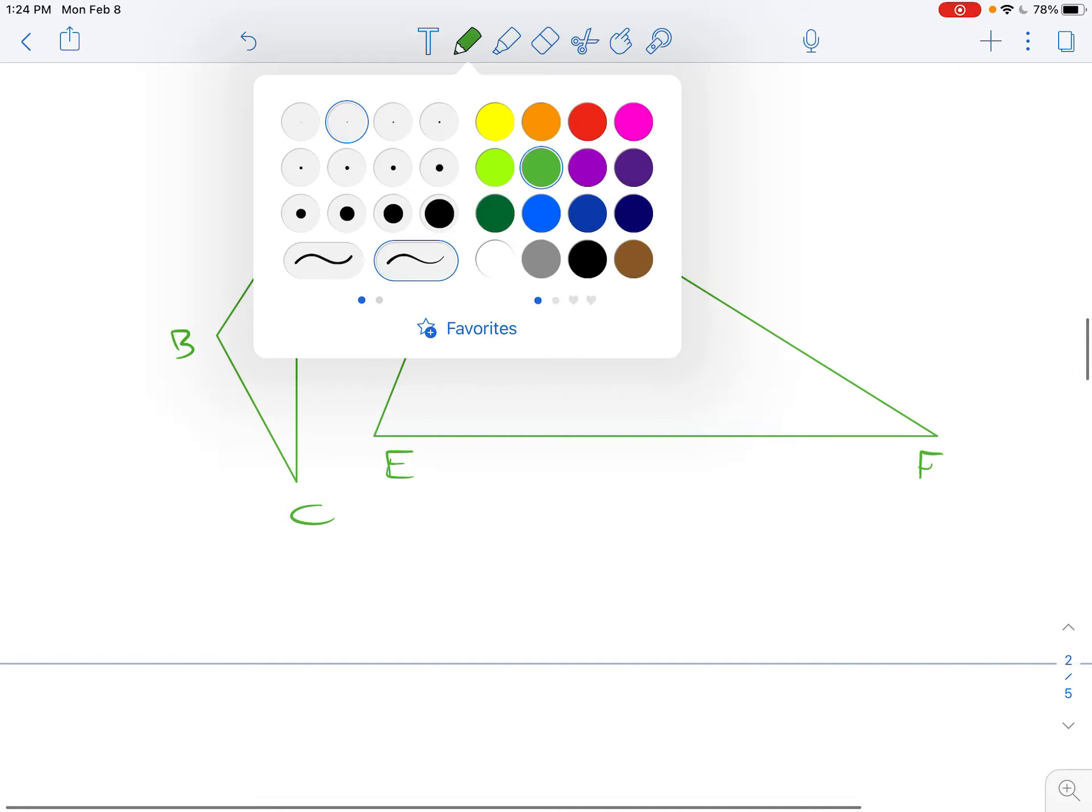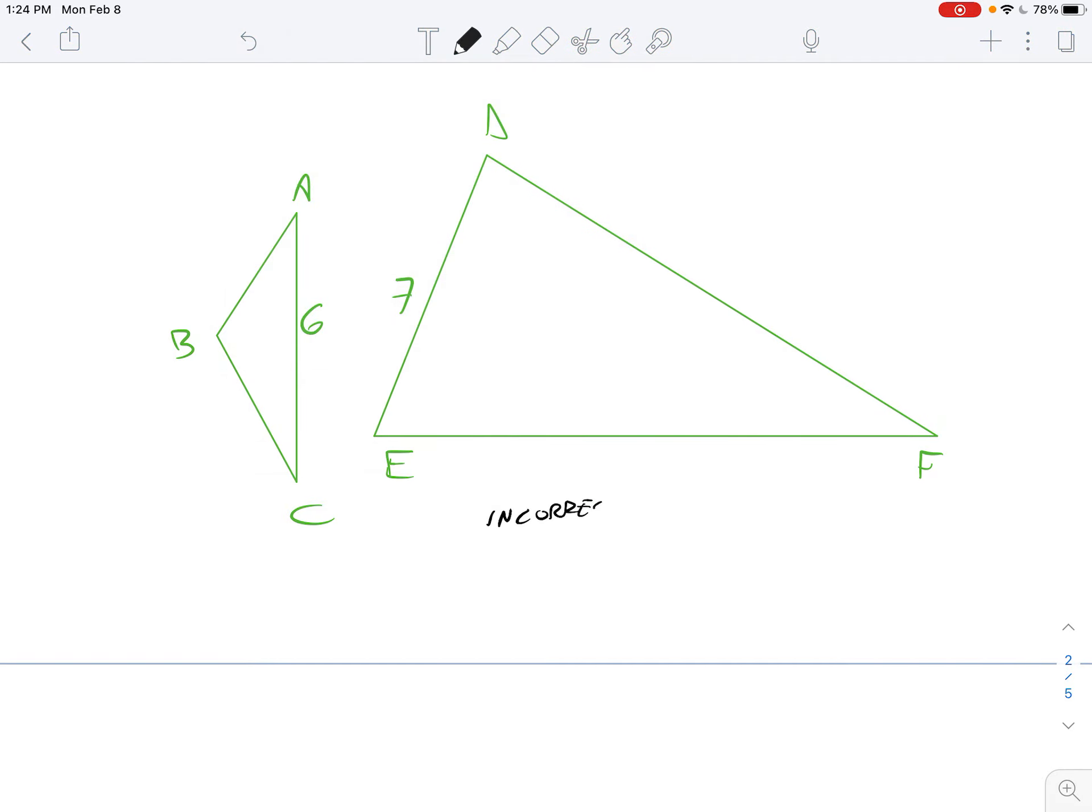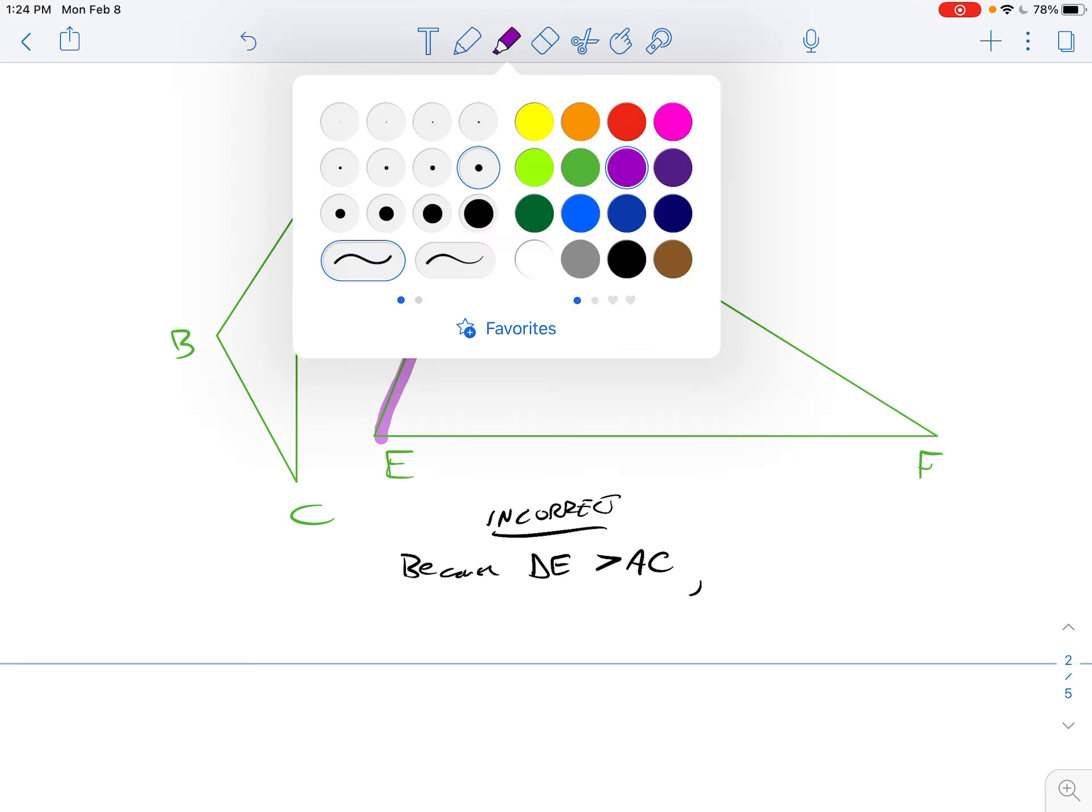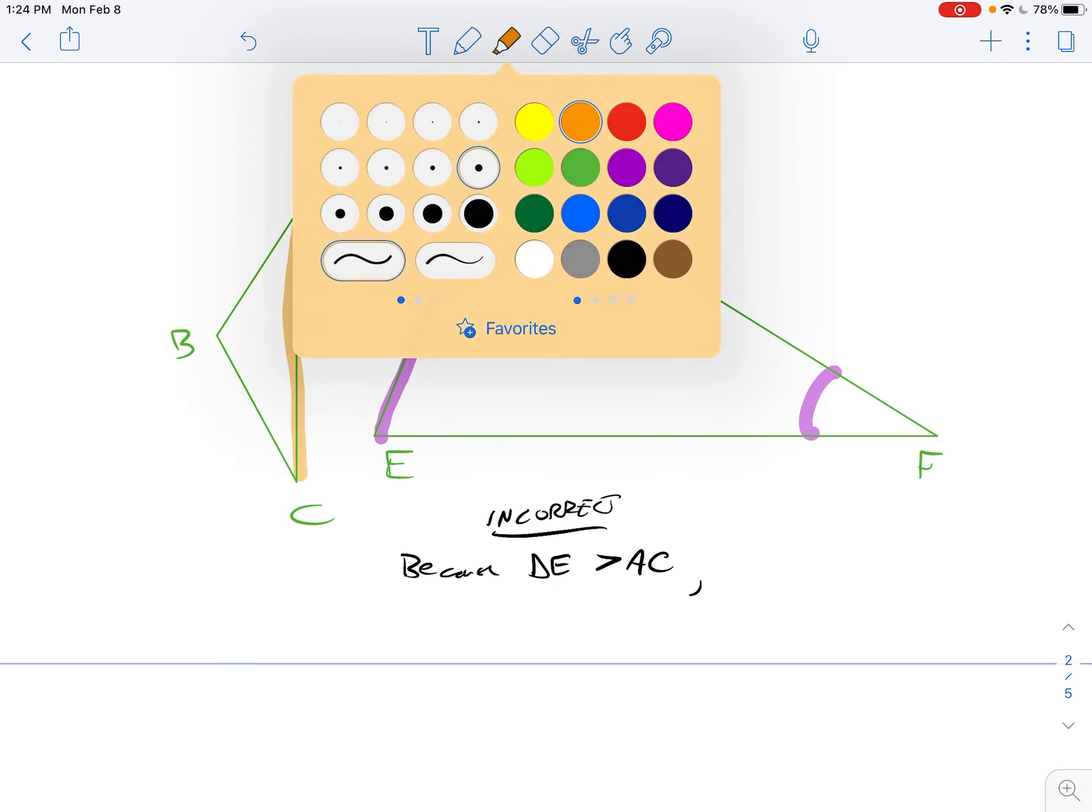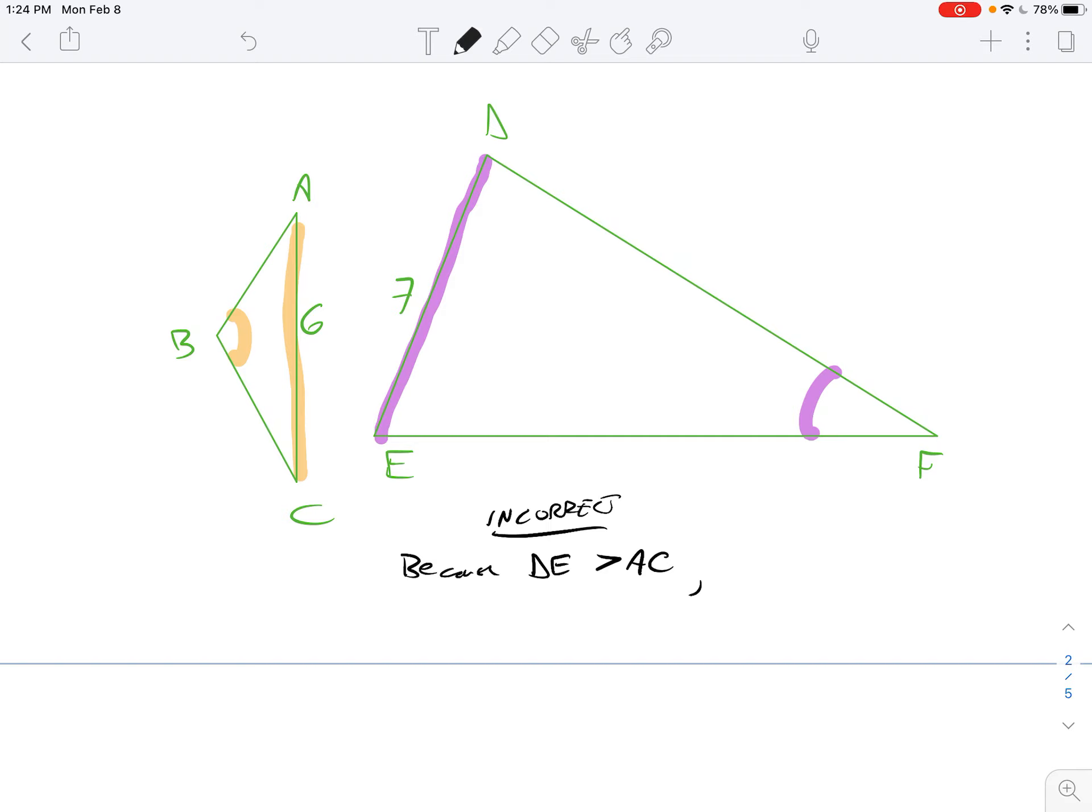So here's what's incorrect. But I've seen people do this. So be very aware of this. I've seen people say because DE is bigger than AC. Here's right when we are comparing those two segments. DE is bigger than AC. The angle opposite DE is over here at F. The angle opposite AC is over here at B. So if people are not paying attention, sometimes they'll say because DE is bigger than AC, then angle F is bigger than angle B.